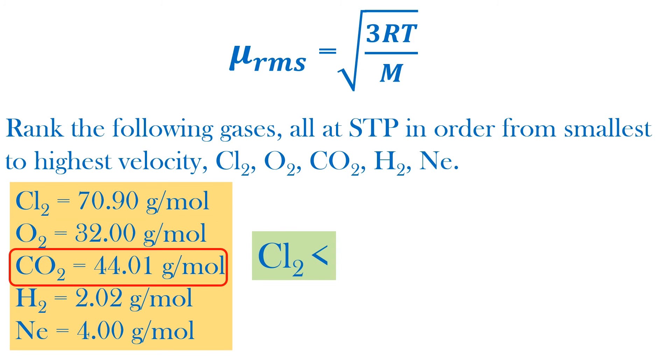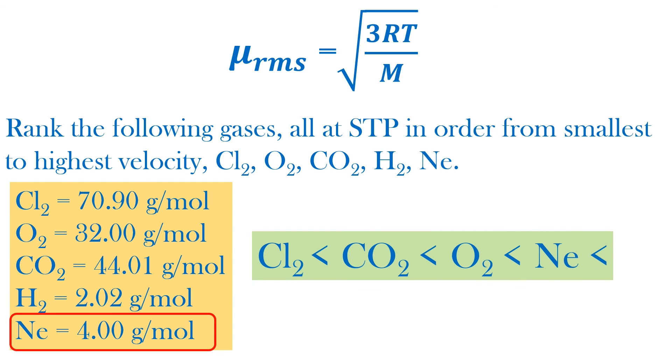Carbon dioxide has a lower molar mass than chlorine, thus slightly higher velocity. Next is oxygen, then neon. Finally, hydrogen gas, the lightest gas, has the highest velocity.